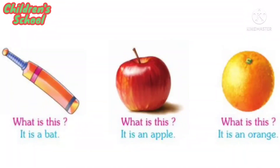What is this? It is a bat. What is this? It is an apple. What is this? It is an orange.